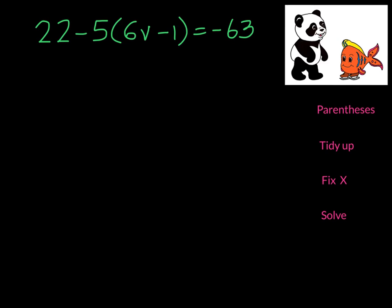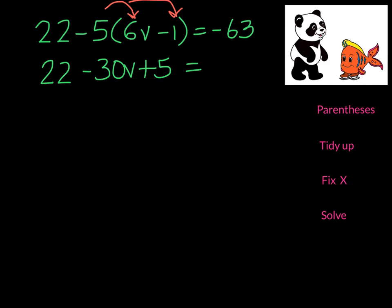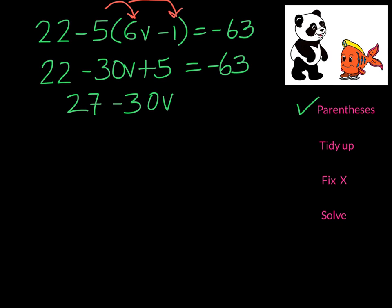We will distribute first. Notice 22 is not affected by this — we will write it as it is and multiply. We'll get negative 30v and plus 5. The rest of the equation stays the way it was. We've gotten rid of the parentheses. Now we need to tidy up because we have 22 and 5 — we need to combine these two, which will give us 27. The rest of the equation stays the way it was. So we've tidied up.